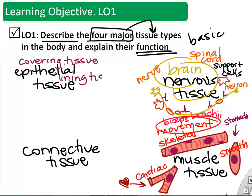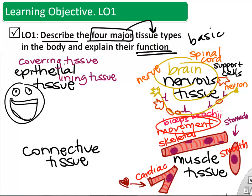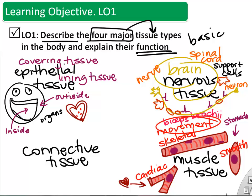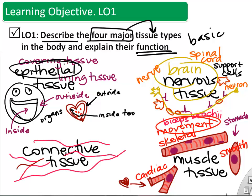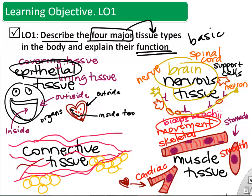Epithelial tissue — I like to remember these as covering tissues or lining tissues. Your skin on the outside of your cheek is an epithelial tissue, and the cover on the inside of your mouth is also epithelial tissue. The heart has an outside cover and an inside layer, and both of those are covered by epithelial tissues. Connective tissue is the space filler, the support, the organization, and the strength of all the organs of our body.